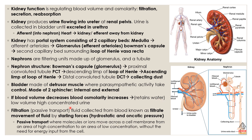Passive transport is where molecules or ions move across a membrane from an area of high concentration to an area of low concentration, without the need for energy input from the cell. In this case, the glomerular capillaries are at high pressure, moving fluid into the Bowman's capsule and then through the tubules and loop of Henle.